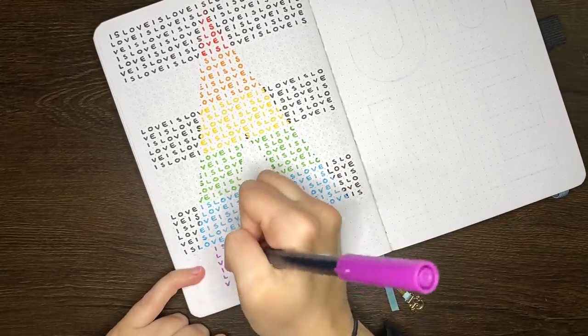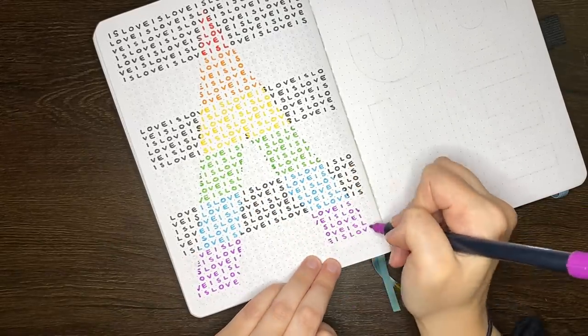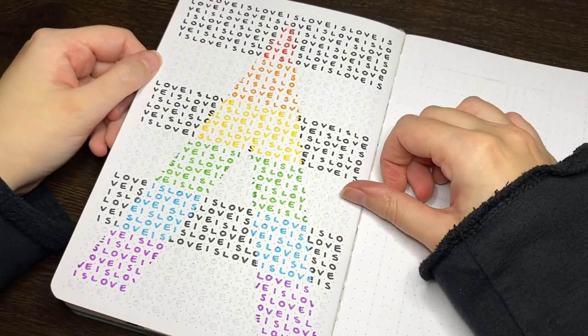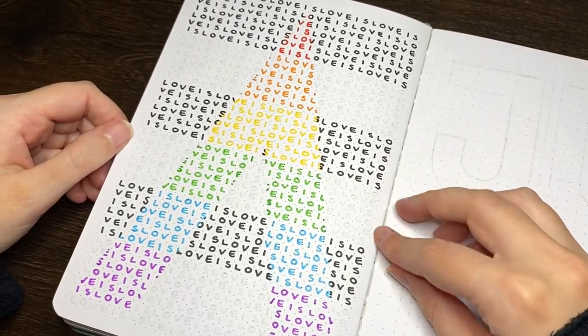You can likely also see that for each subsequent row, I offset the love is love quote by two letters, just so that I didn't end up with columns of individual letters. In terms of timing, the quote page took me 36 minutes, and then it was on to the cover page.